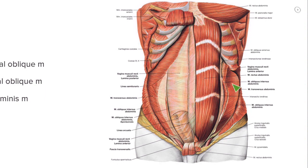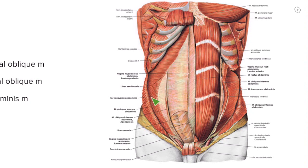And then this demonstrates the deepest flat muscle layer, which would be your transversus abdominis. Over here on the other side, we can still see those same components: external abdominal oblique, the internal abdominal oblique being reflected laterally, and then running deep to that is the transversus abdominis.